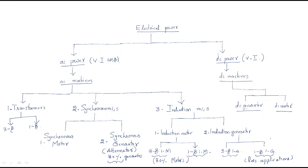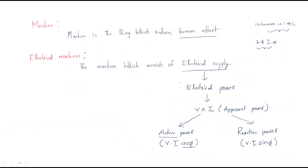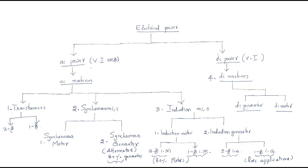So these are the classifications of electrical machines. To complete the subject of electrical machines, you need to cover all four topics: transformer, synchronous machines, induction machines, and DC machines. This concludes the introduction to electrical machines and their classification. I hope all of you understood this introduction class. Thank you.